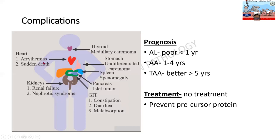Complications of amyloid: in the heart, arrhythmias and sudden death. In the thyroid, associated with medullary carcinoma. In the stomach, associated with undifferentiated carcinoma. Splenomegaly. In the GI tract, constipation, diarrhea, malabsorption. In the kidney, renal failure and nephrotic syndrome. Prognosis: AL amyloid has poor prognosis with survival less than one year. AA amyloid in chronic inflammations, one to four years. Transthyretin amyloid has better prognosis — more than five years.